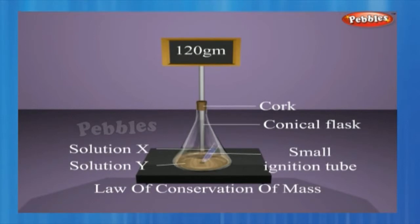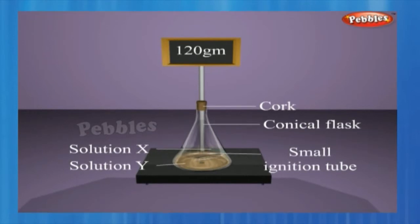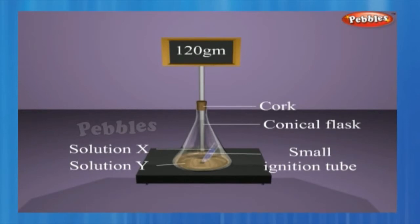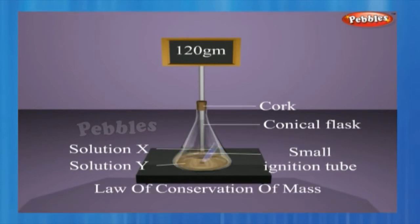Prepare separately a 5% solution of any one pair of substances listed under X and Y in water. Take a little amount of solution of Y in a conical flask and some solution of X in an ignition tube. Hang the ignition tube in the flask carefully so that the solutions do not get mixed. Put a cork on the flask. Weigh the flask with its contents carefully.